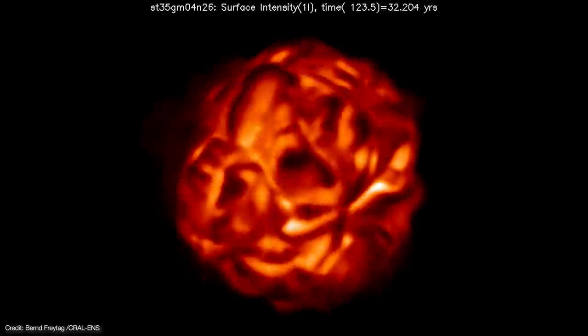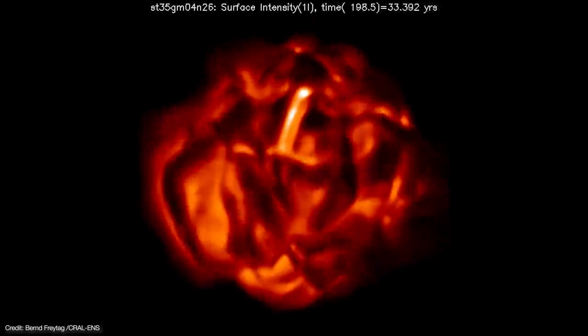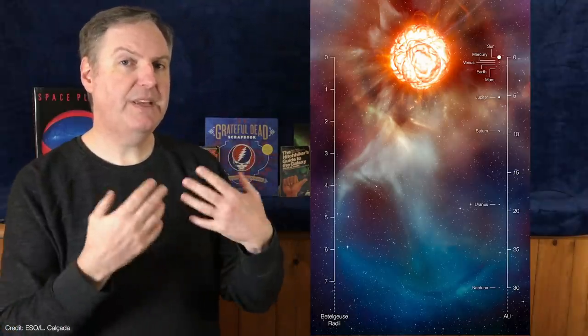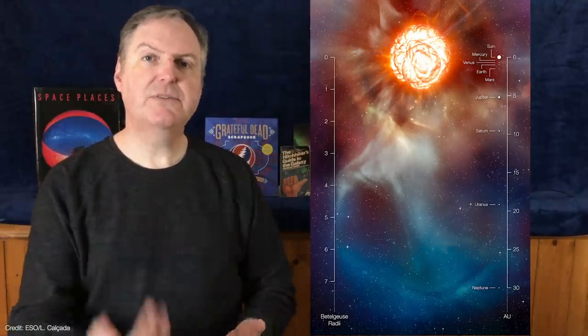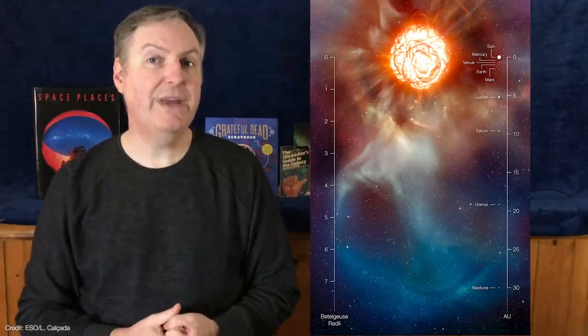The outer layers are so far away from the star's interior that its gravitational pull on the surface is very weak. If enough energy gets convected up from the interior, a chunk of the surface can blow away, forming Betelgeuse's powerful stellar wind.